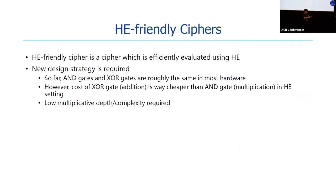In the transcyphering framework, there is a symmetric cipher that is evaluated both in clear and while encrypted. So in this sense, the cipher should be efficiently evaluated by homomorphic encryption — we call it an HE-friendly cipher. In normal hardware, AND-gates and XOR-gates need roughly the same resources. However, in homomorphic encryption schemes, multiplication is much more expensive than addition. So to design HE-friendly ciphers, low multiplicative depth and complexity are required.